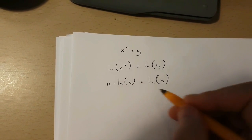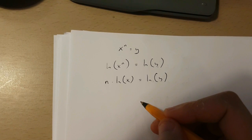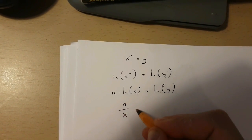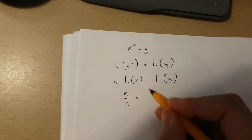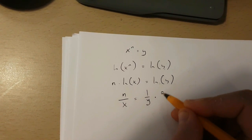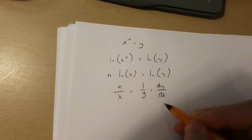Now if we use implicit differentiation over here, we're going to get n over x is equal to 1 over y times dy over dx.